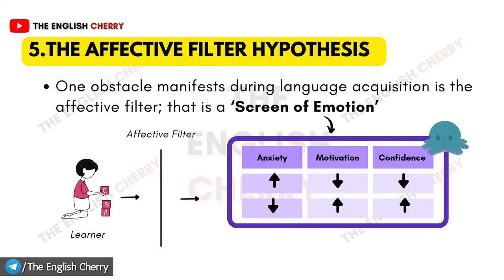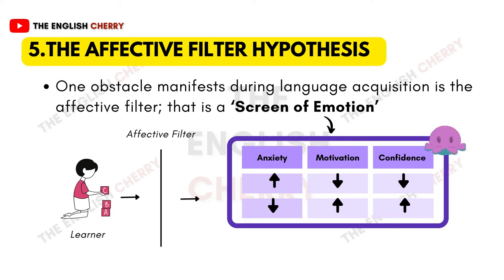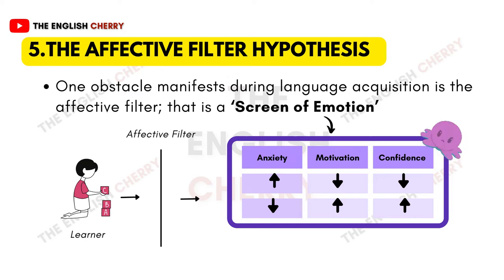The last hypothesis is the affective filter hypothesis, which relates to the psychological aspect of the learner. According to Krashen, one obstacle that manifests during language acquisition is the affective filter — a screen of emotion that prevents learning. A learner is backed by a barricade of anxiety, self-confidence, motivation, or stress, and this differs from person to person. In education, it is always important to create a safe, welcoming environment in which the learner can learn. If anxiety is high and motivation is low, self-confidence becomes low and learning is difficult. Conversely, if anxiety is low and motivation is high, self-confidence boosts and language learning becomes easy. Hence, it is advised to keep your mind free to acquire any language.